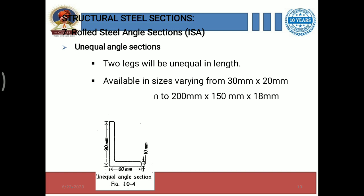The only difference between equal angle sections and unequal angle sections is that the length and width of the section are different. These are available in sizes varying from 30 mm x 20 mm x 3 mm up to 200 mm x 150 mm x 18 mm. This is the range for unequal angle sections.